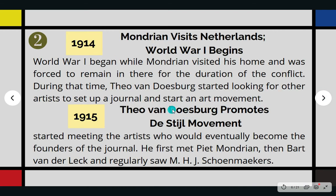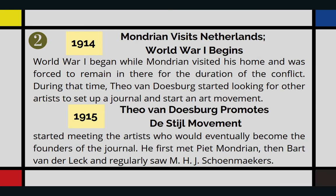Let's dive into its history. In 1914, Mondrian visited the Netherlands and World War I began. World War I began while Mondrian visited his home and was forced to remain there for the duration of the conflict. During that time, Theo van Doesburg started looking for other artists to set up a journal and start an art movement. The reason why Mondrian went home is because he was summoned by his father's bedside. He wasn't expecting that he found himself trapped in this, but since the country was neutral during the war, Mondrian was never in any danger at all. Yet he felt painfully cut off from the important works and the artistic momentum.